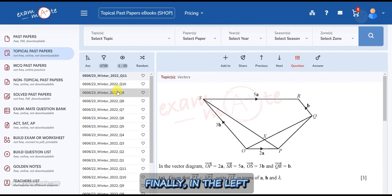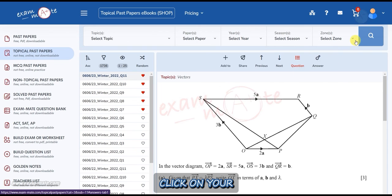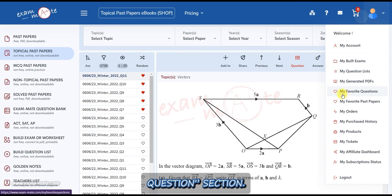Finally, in the left windows that list the questions, you can like any question you want. To see the questions you liked, click on your profile picture and you can see them in the my favorite question section.